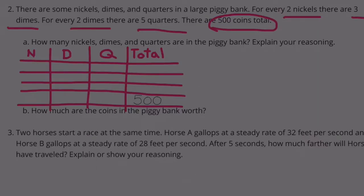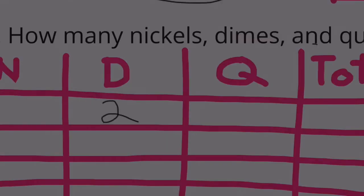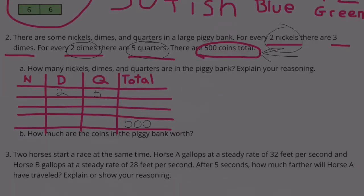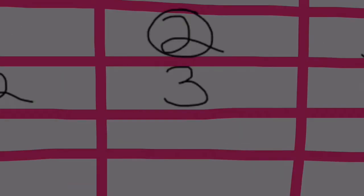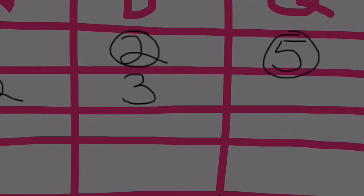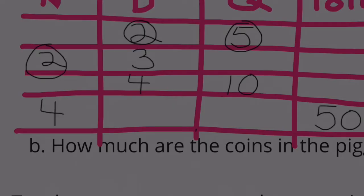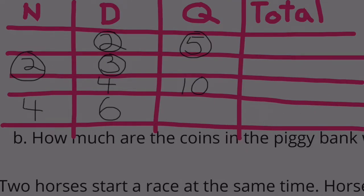So we know that there's a total of 500 coins. When we have 2 dimes, we have 5 quarters. For every 2 nickels, there are 3 dimes. Let's double the amount of dimes down here, so it becomes 4. Let's double the amount of quarters, so it becomes 10. I'm going to double the amount of nickels and dimes. I think I'm going to have to erase the total and add to this grid.